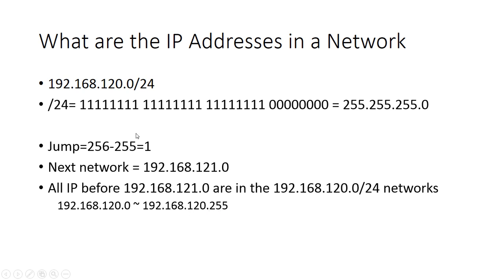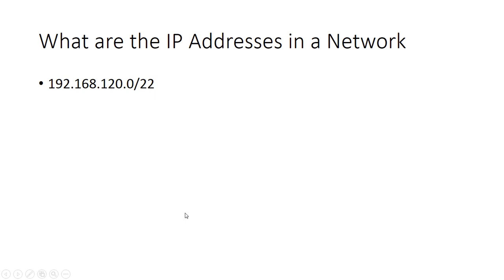All of these IP addresses are in the given network. The very next IP address after 192.168.120.255 is 192.168.121.0, which is the next network. Okay, let's take another example — this network address is given.